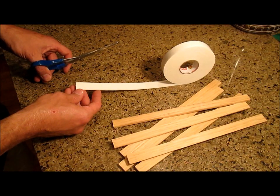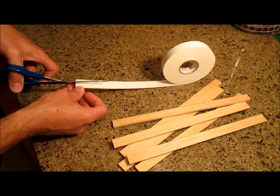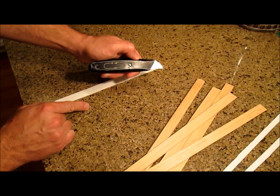If your hardware store carries quarter inch wide double stick tape, get that. Otherwise you can get the wider stuff and just cut it down the middle with a pair of scissors or a utility blade on a suitable cutting surface.